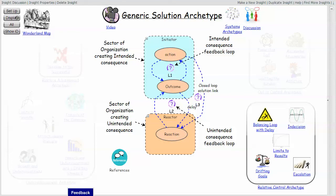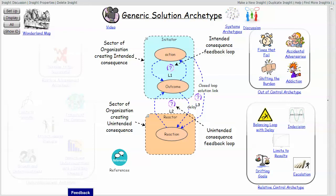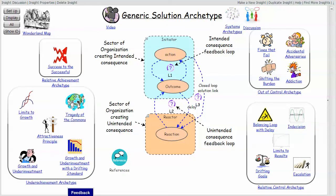One of them is called a relative control archetype, and I will do a video on each of these four generic archetypes specifically. Five other archetypes map into the relative control archetype. Four systems archetypes map to the out of control archetype. One archetype, success to the successful, maps to a relative achievement archetype. And five archetypes map into the underachievement archetype.